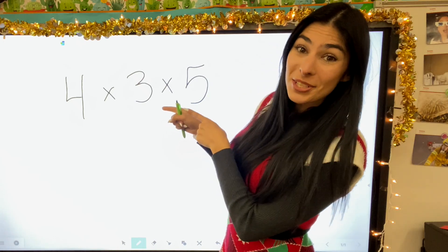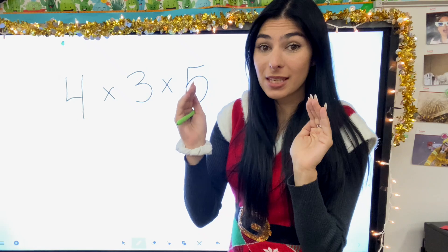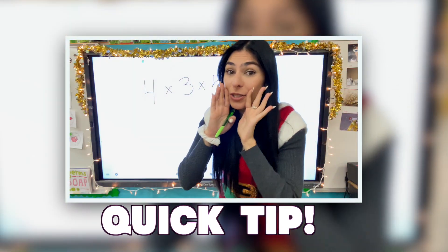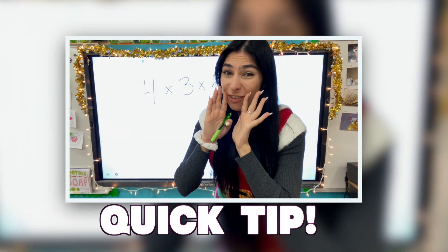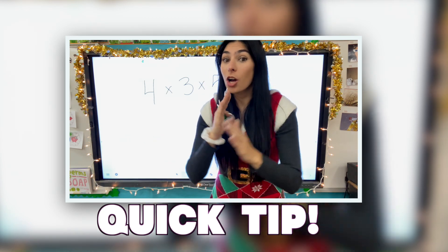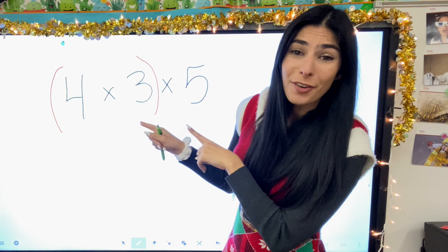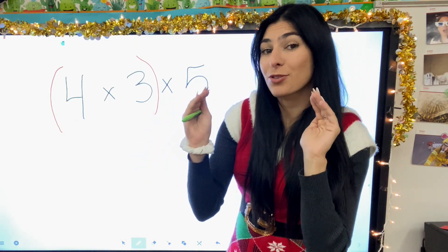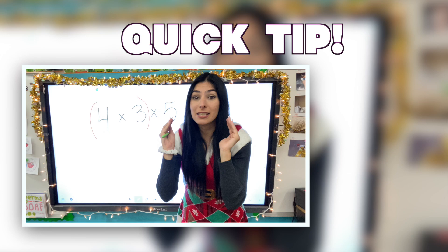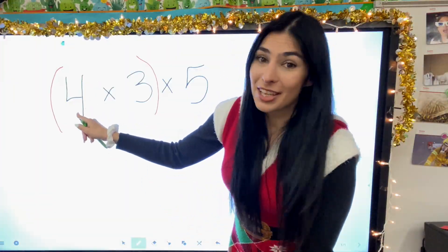Our first equation: we have four times three times five. I'm going to throw in my parentheses. Parentheses are the clue that you're dealing with associative property or distributive property. Quick clue: distributive property has multiplication and addition; associative property only has multiplication. Mental tip — whenever you see parentheses, solve parentheses first. Say it with me: solve parentheses first.